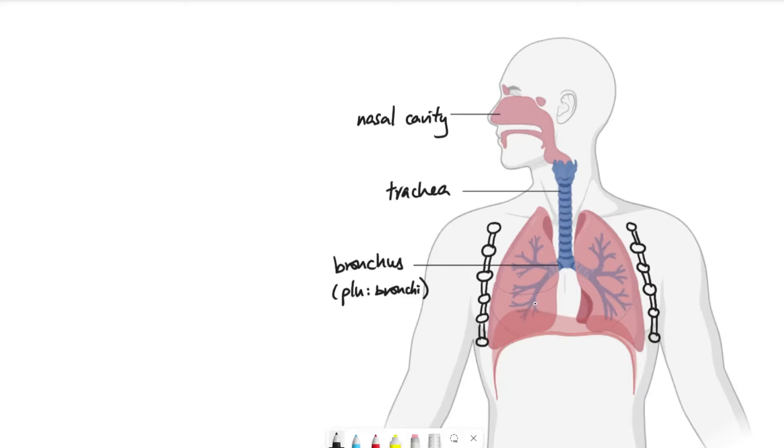And then finally, at the end of the bronchi, we can have the bronchioles, which are the smaller branches from the bronchus at the end of that. And then at the end of the bronchioles, we'll get to the alveoli, which I'll talk about shortly.